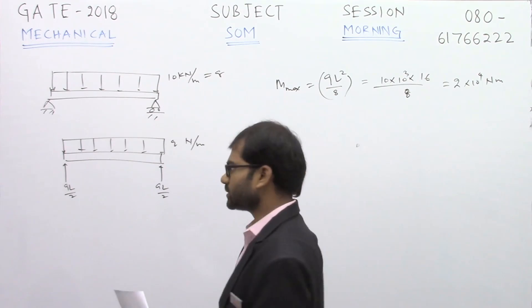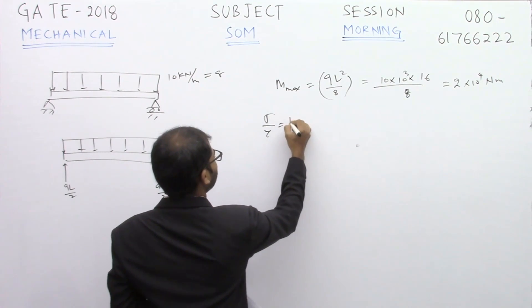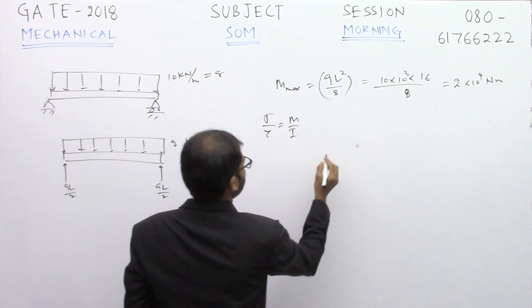Now let us get the bending stress value. Using Euler-Bernoulli's equation, we have σ/y = M/I.